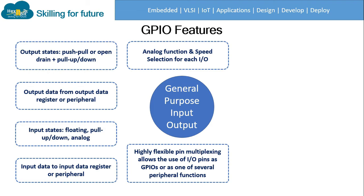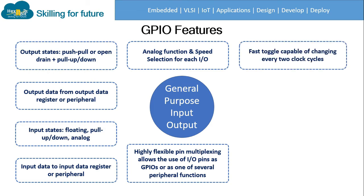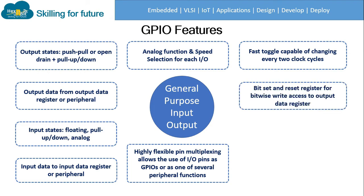In this MCU, or in any MCU of ARM Cortex, all the pins are multiplexed, meaning they can be used for various applications. Fast toggle is capable of changing every two clock cycles. With the highest speed selected, the toggling speed can be as fast as every two clock cycles. The bit set and reset register provides bitwise write access to the output data register, allowing us to write particular data to access it bitwise.